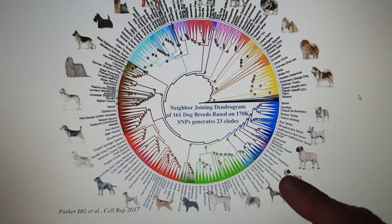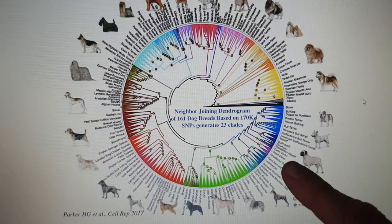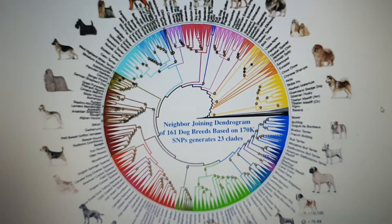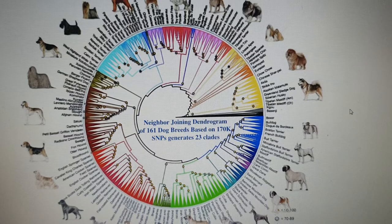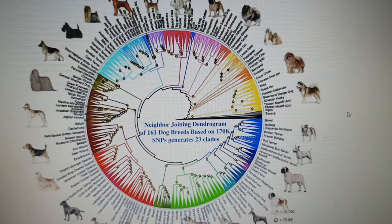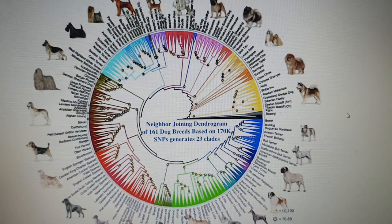Looking at Schnauzers and Pinschers historically: there was a Pinscher with rough coat — 'Rauhaar' — which became the modern Schnauzer, and the smooth-coated version remained the Pinscher. 'Pinscher' means 'to bite' in German. Then the Molossers: Saint Bernard and Leonberger appear here, along with the Bernese Mountain Dog, the Cane Corso, Great Danes, and the Rhodesian Ridgeback.